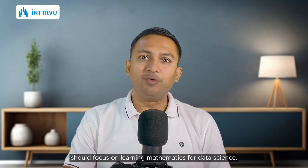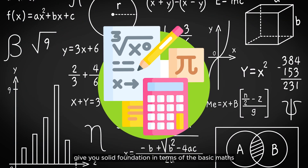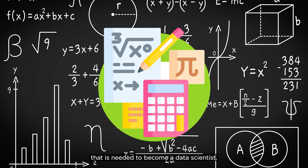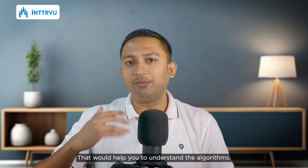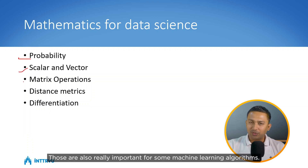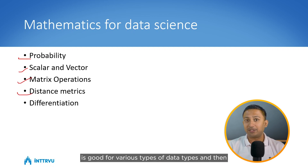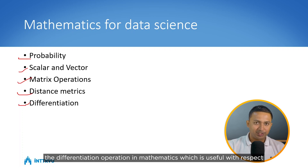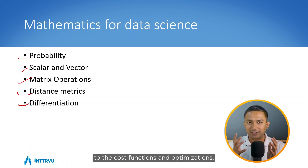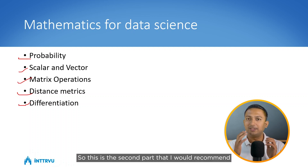The next thing you should do is focus on learning mathematics for data science. Don't jump into machine learning directly — start with Python, then go to mathematics. The goal isn't to become a mathematician; the goal is to understand the basic maths needed to understand the algorithms. You can start with probability, then scalars and vectors, matrix operations, various distance metrics, and differentiation, which is useful with respect to cost functions and optimization.